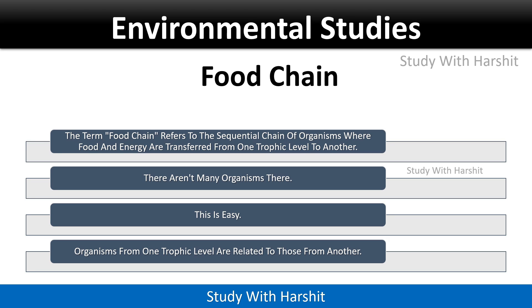Food chain: The term food chain refers to the sequential chain of organisms where food and energy are transferred from one trophic level to another. There are not many organisms at each level, and organisms from one trophic level are related to those from another.